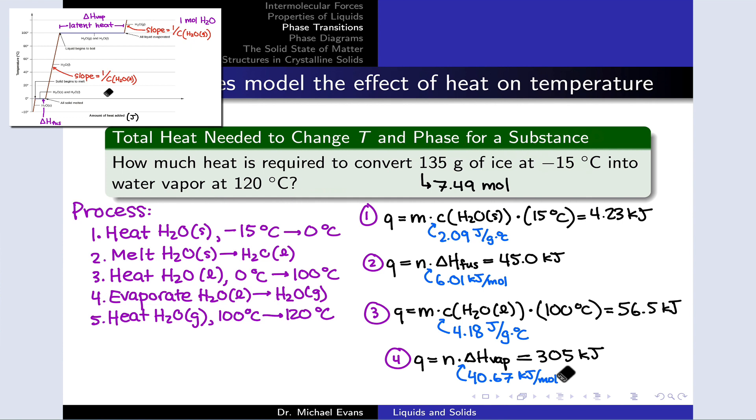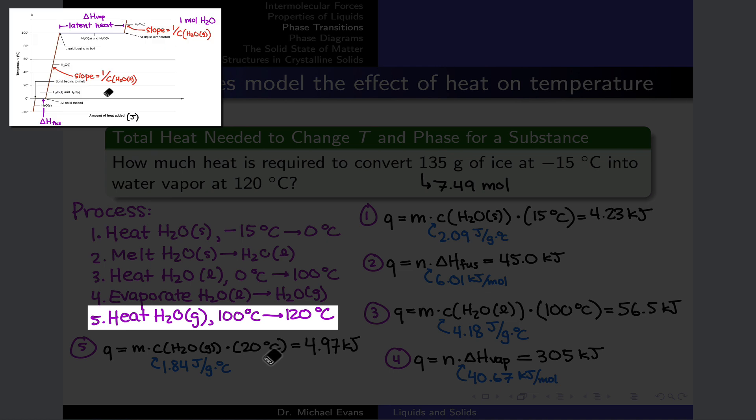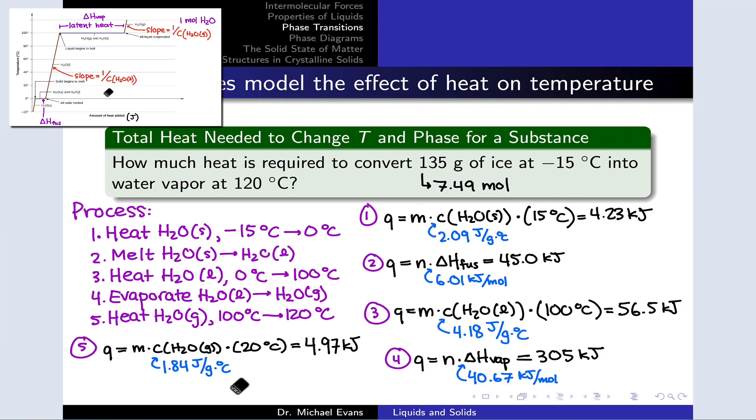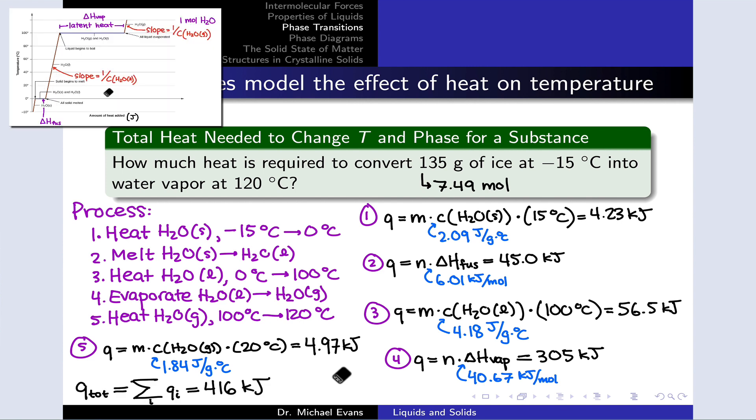And then finally, we're going to do a little bit of heating to get that gas from 100 to 120 degrees C. That's a delta T of 20 degrees C. We're using the specific heat of water vapor now, gaseous water. And the mass is still 135 grams, 4.97 kilojoules as the result of that calculation. To figure out the total heat, we simply take the heats associated with each of these individual steps and add them up, and the result is 416 kilojoules.